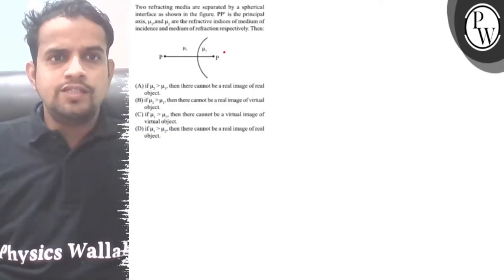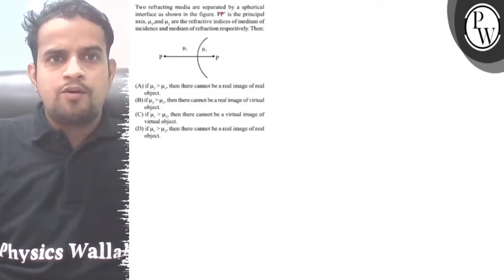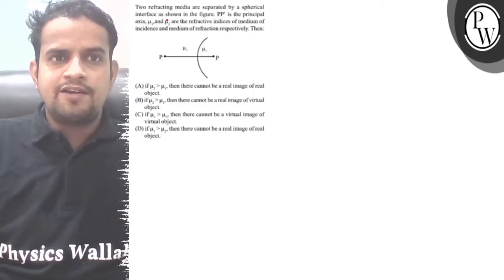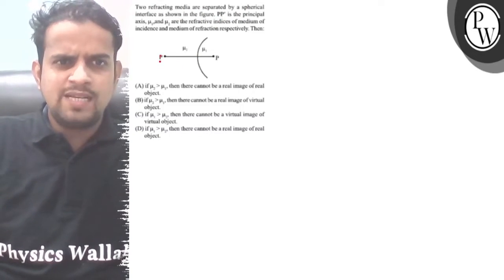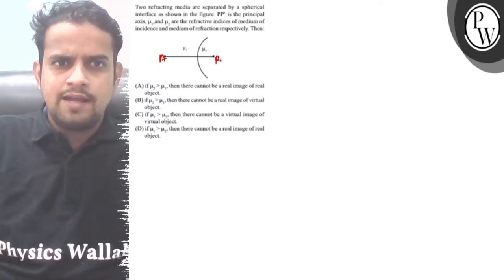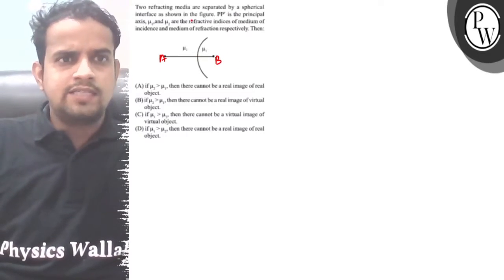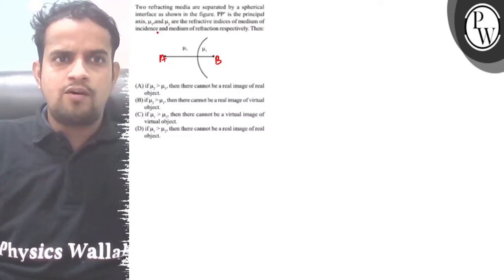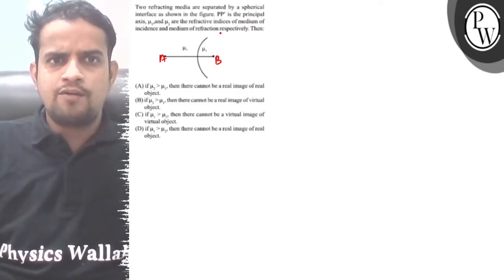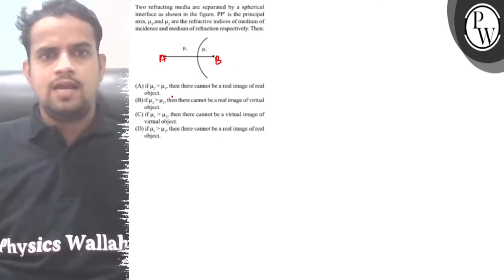Hello students, let me consider this question. Two refractive media are separated by a spherical interface as shown in the figure PP dash. AB is the principal axis. μ₁ and μ₂ are the refractive indices of the medium of incidence and the medium of refraction respectively.